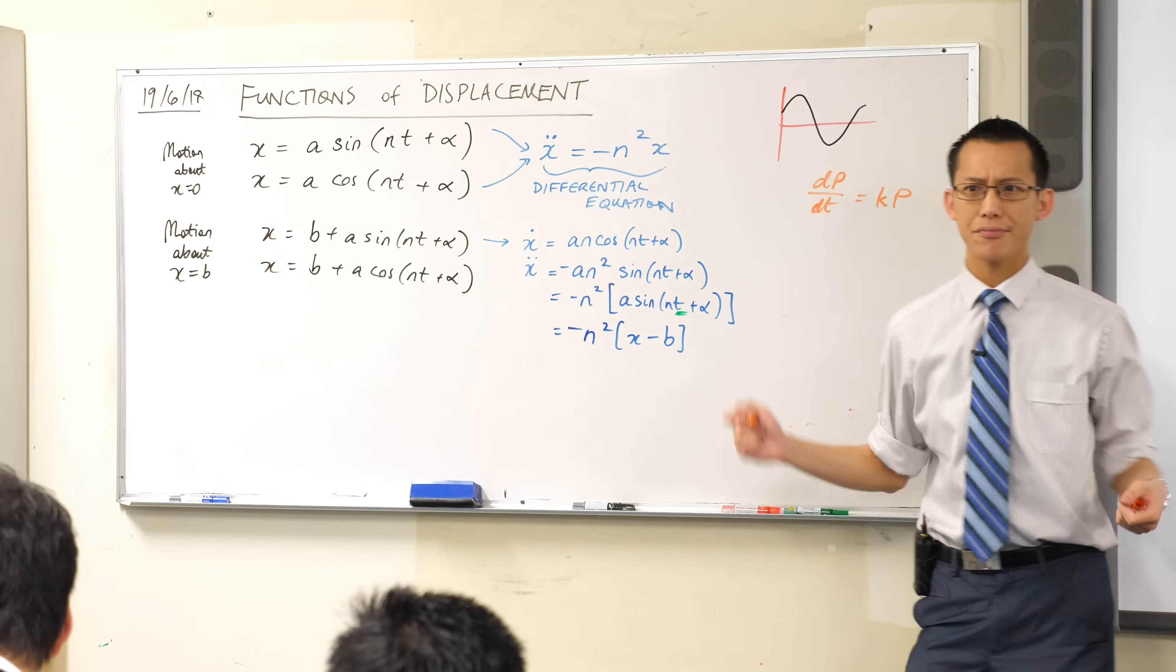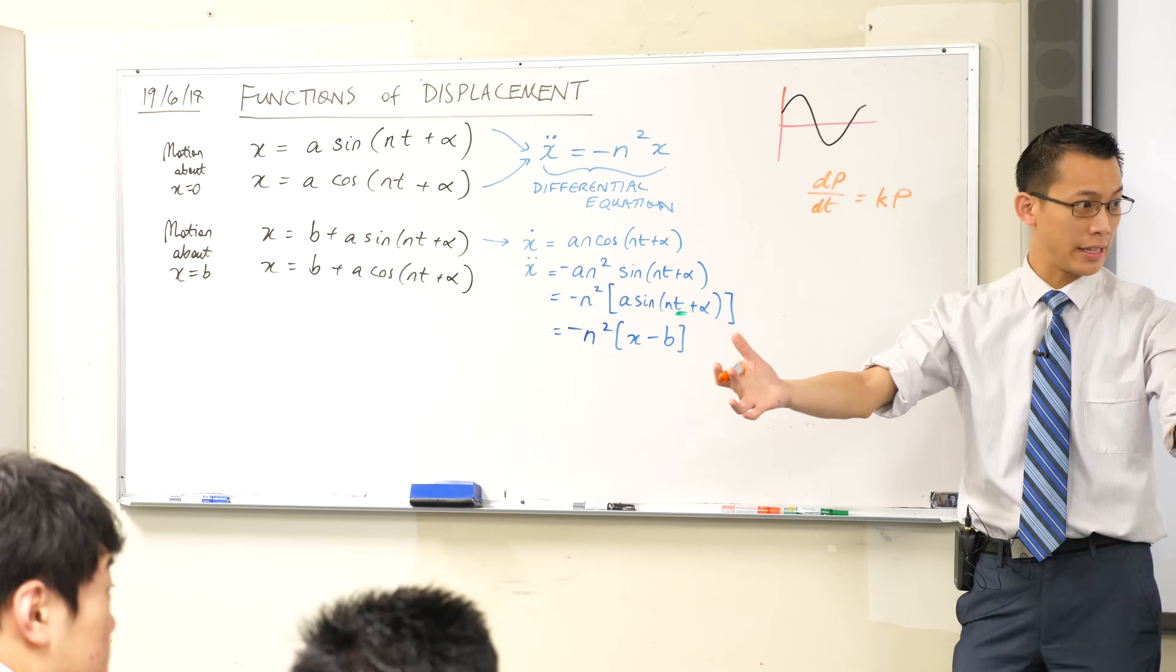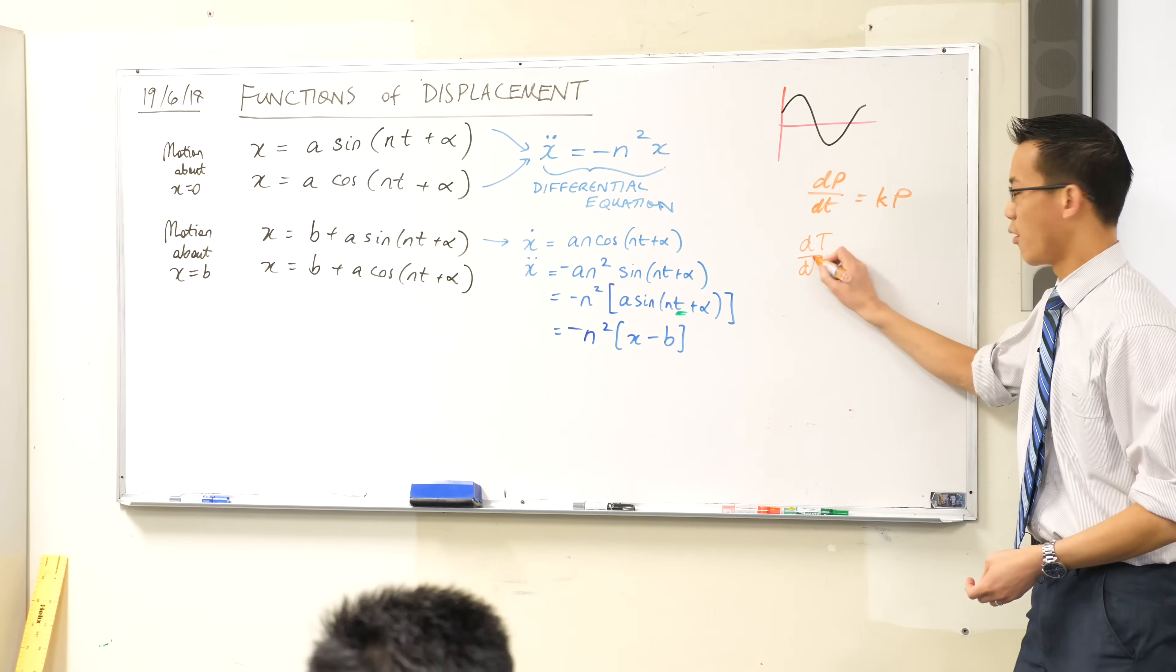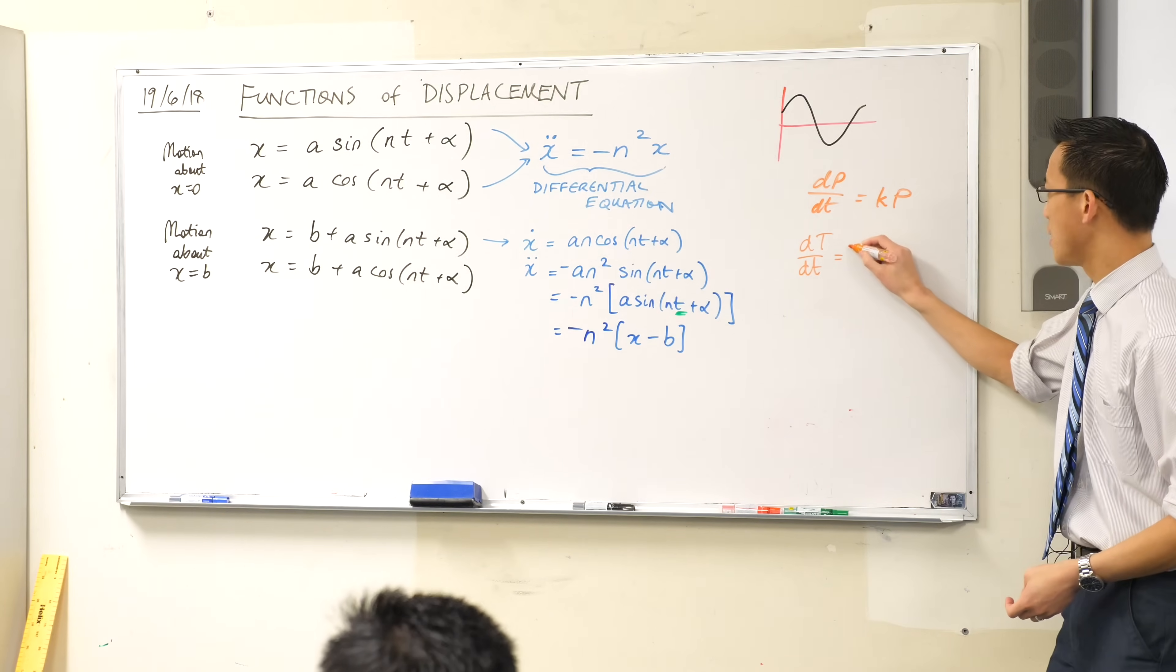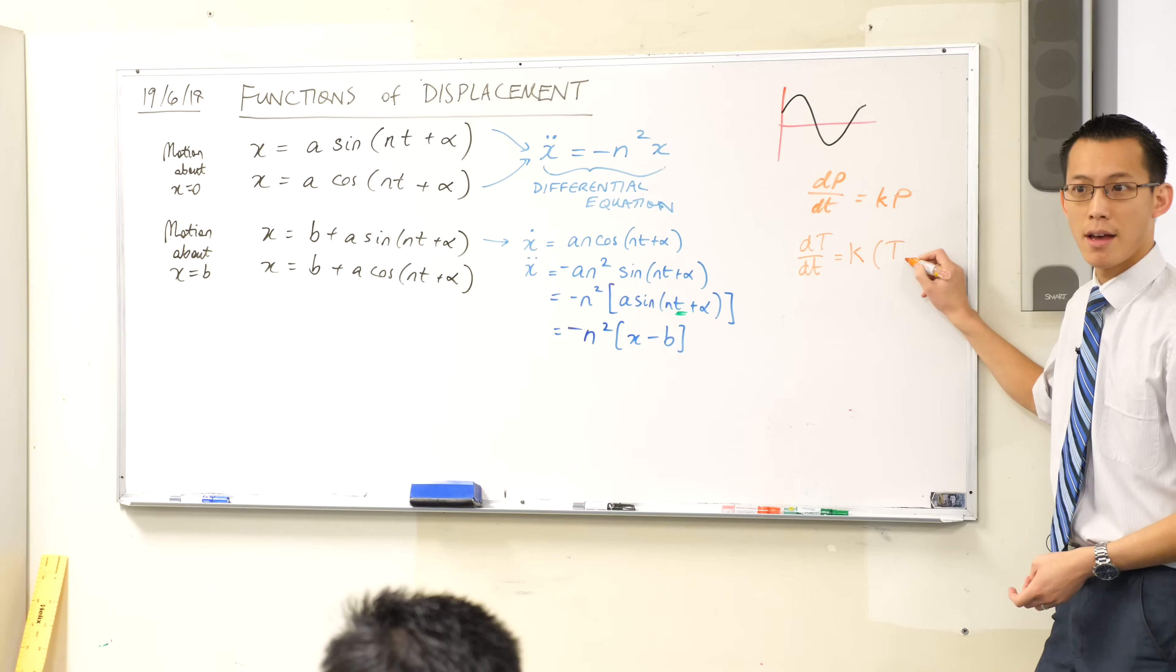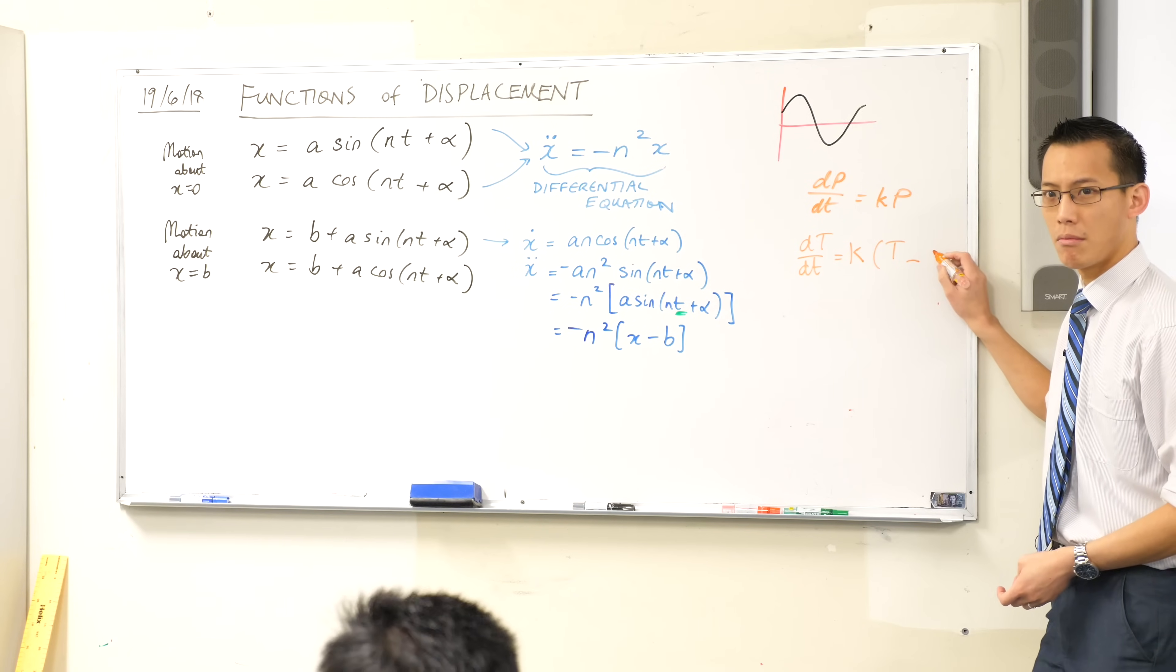Things like, say, Newton's law of cooling was a really important example that we looked at. We could say that the change in temperature with respect to time was going to be proportional to the temperature, rather, and its difference from the environment, right?